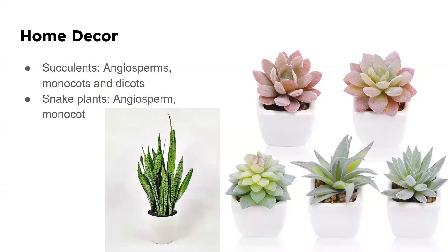The last thing I wanted to talk about was home decor. In my apartment right now, we have a lot of succulents. Succulents fall within the angiosperm family and can be either monocots or dicots depending on the species. Snake plants are another type of plant I have in my house — they are angiosperms, particularly in the monocot family. A lot of people like these because they're very hard to kill, they're small, and they look nice. You can easily put them in a pot, leave on vacation, forget to water them for a few months, and they will keep on living. And that is my relationship with seeding plants. Thank you.